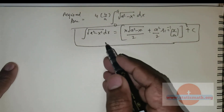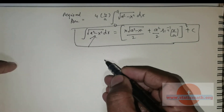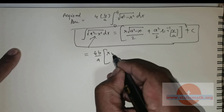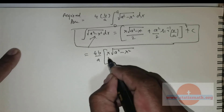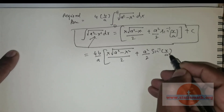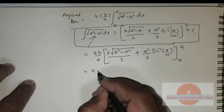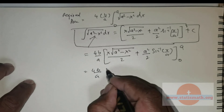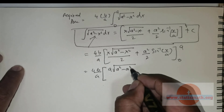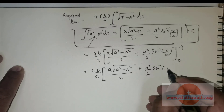You can just leave a comment asking me how to obtain this formula and I can give it to you. Now, this can be rewritten as 4b divided by a. Substituting the formula gives x times square root of a squared minus x squared divided by 2, plus a squared over 2 times sine inverse of x over a, with limits 0 to a. Substituting the upper limit: a times the square root of a squared minus a squared divided by 2, plus a squared over 2 times sine inverse of a over a.